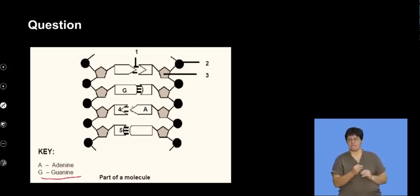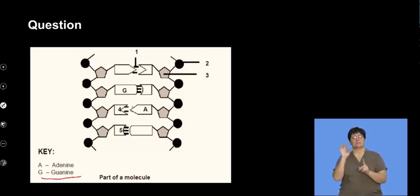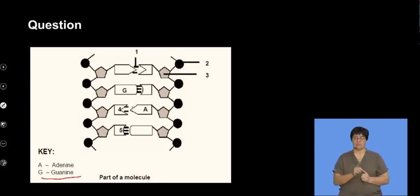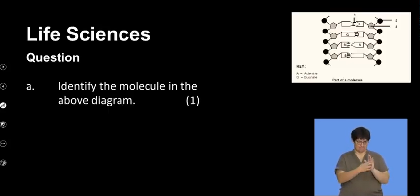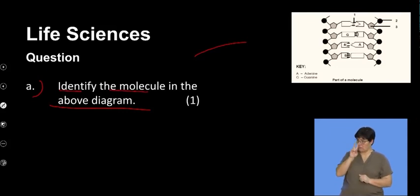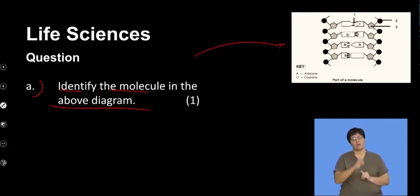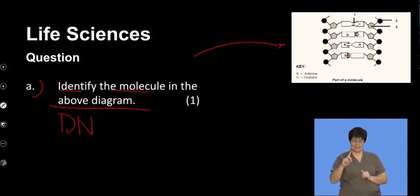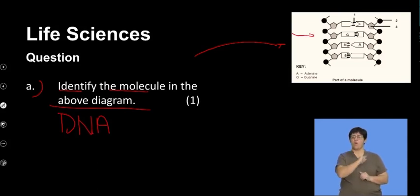A key has been provided referring to the specific shapes and names of these nucleotides. The first question asks us to identify the molecule in the diagram. When I look at that molecule, it's referring to the type of nucleic acid, and the answer is DNA. I can say that simply because it is a double-stranded structure, and importantly, DNA would contain a thymine base.